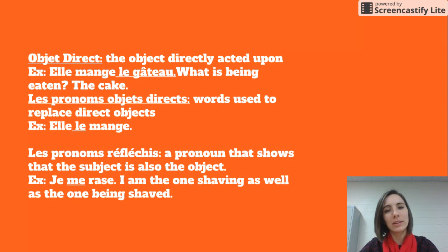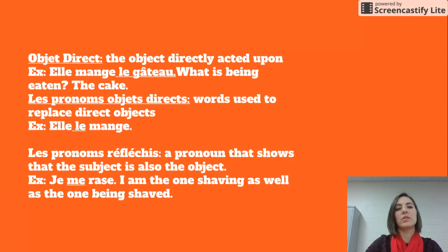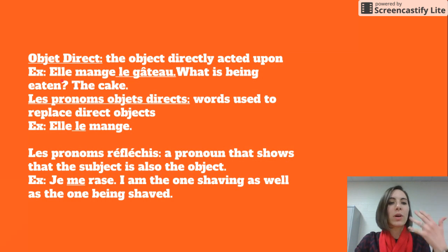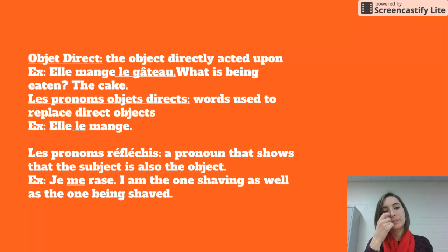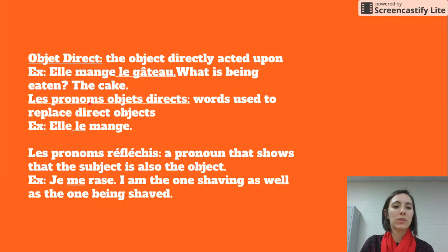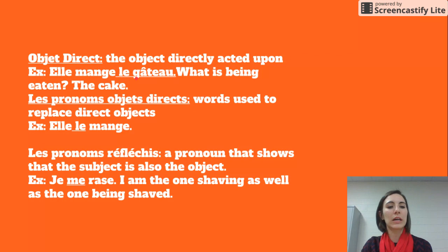We've talked about pronoms objet direct, where we're replacing the direct object. Here we have an example: elle mange le gâteau. If you can ask yourself what is being eaten and you can answer that, then that's a direct object — the cake. Les pronoms objet direct are words used to replace direct objects, so we have elle le mange, replacing le gâteau. Direct objects can be people or things.